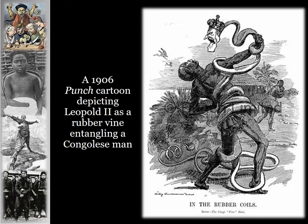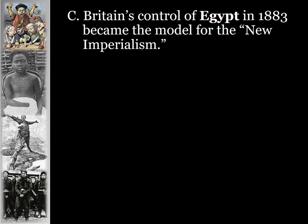A 1906 Punch cartoon depicted King Leopold II as a rubber vine entangling a Congolese man. The rubber vine looks like a snake strangling the Congolese man, showing Leopold taking everything from the Congolese people. The name of this cartoon was 'In the Rubber Coils.'